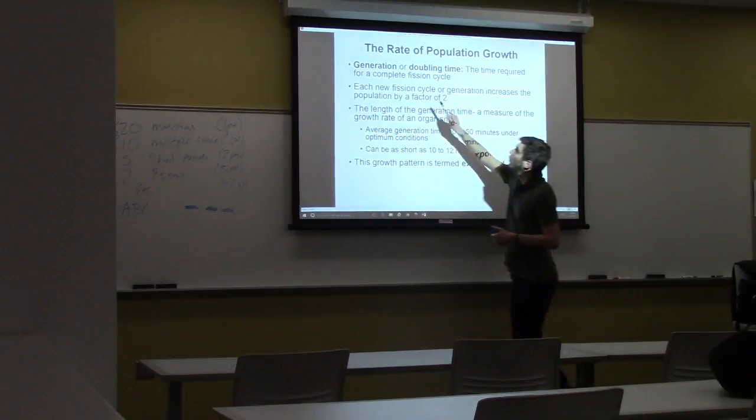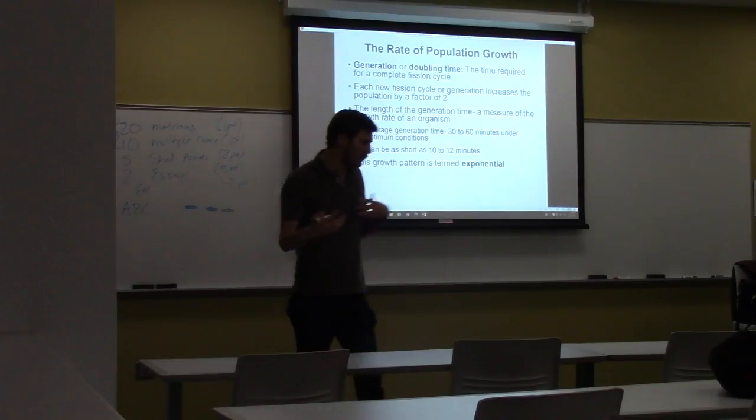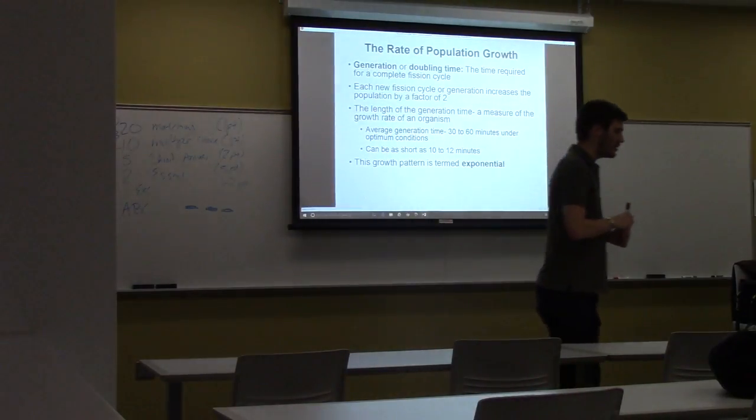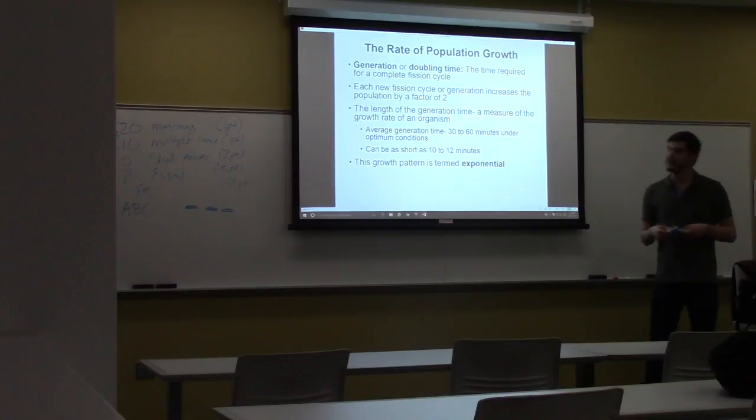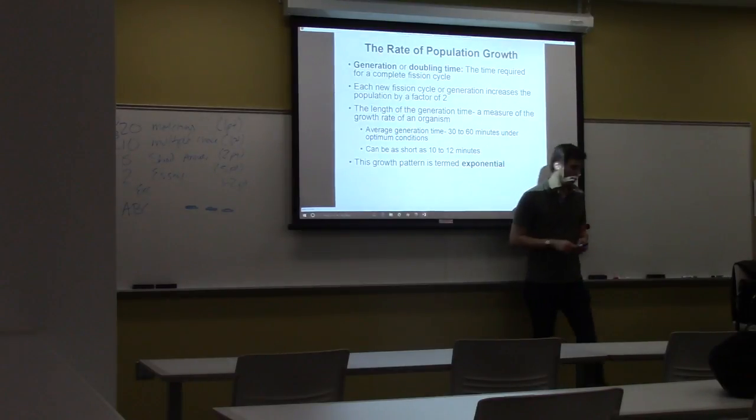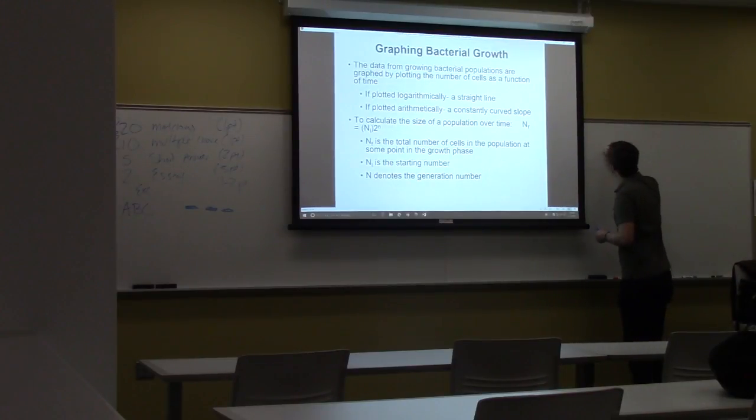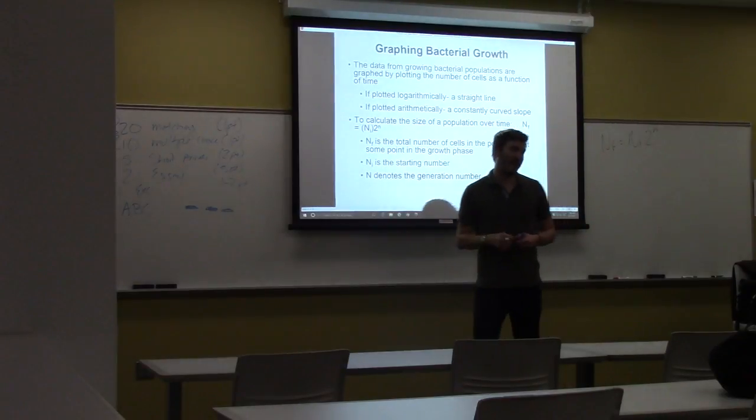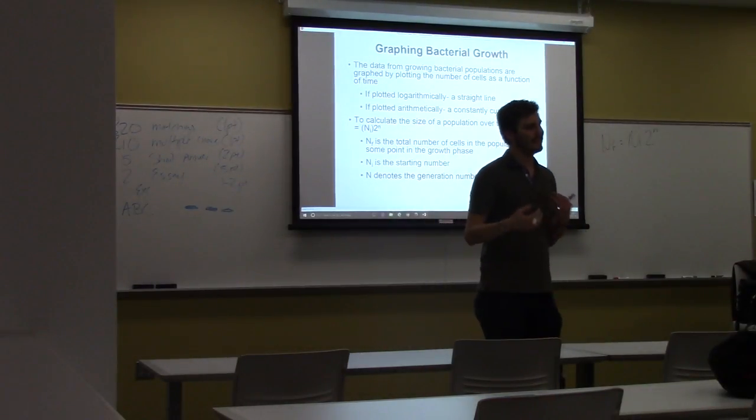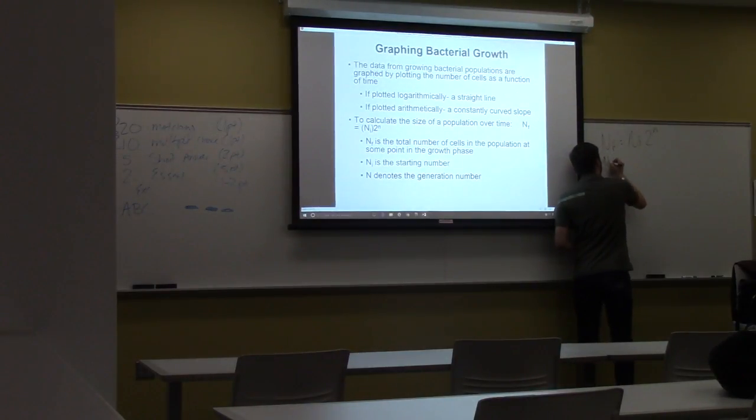And they can do this pretty quickly. And what is the amount of time required to go from one cell to the other called? Doubling time, right? So this is the amount of time it takes for one cell to become two. And remember, this is determined by the organism itself. So, to figure this out, we have a nice little formula.